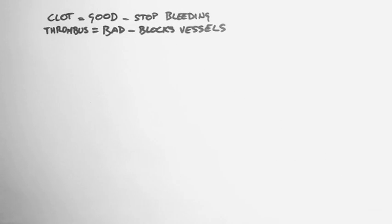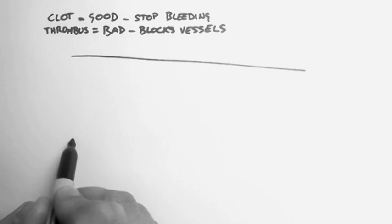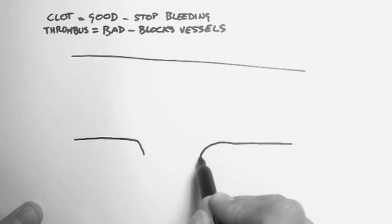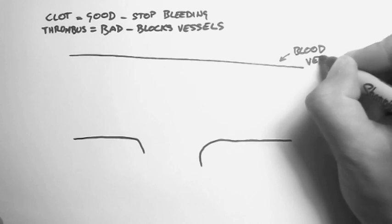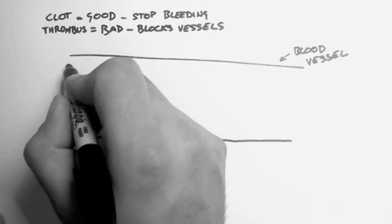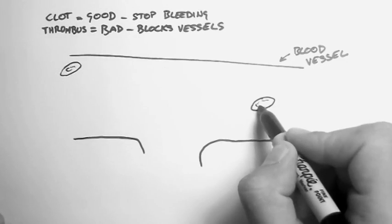So let's look at how this happens. I'll draw out a blood vessel here. And in this blood vessel, of course, we'll have some red blood cells.